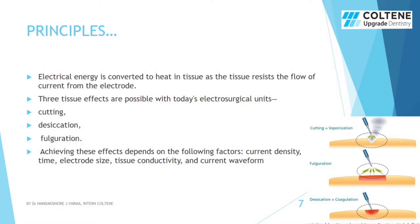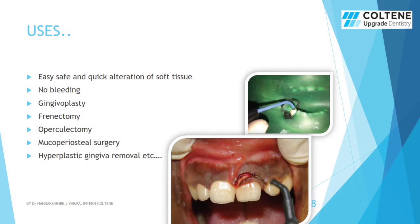The unit does its job by producing heat in tissues, which is offered by the resistance of human tissue. There are mainly three effects possible: cutting, desiccation, and fulguration. It can be used for easy, safe, and quick alteration of soft tissues with no bleeding. Gingivoplasty, frenectomy, opculectomy, mucoperiosteal surgeries, and hyperplastic gingival removal are some examples.